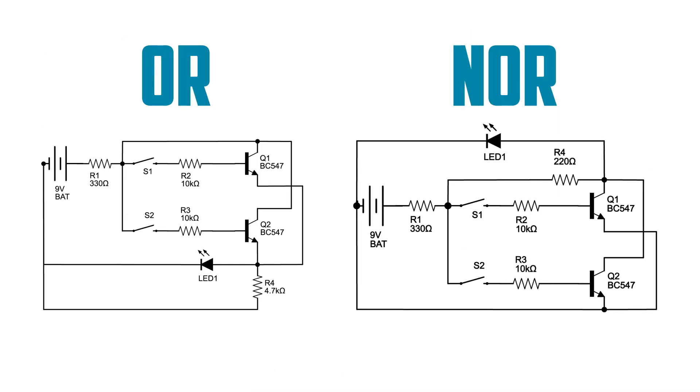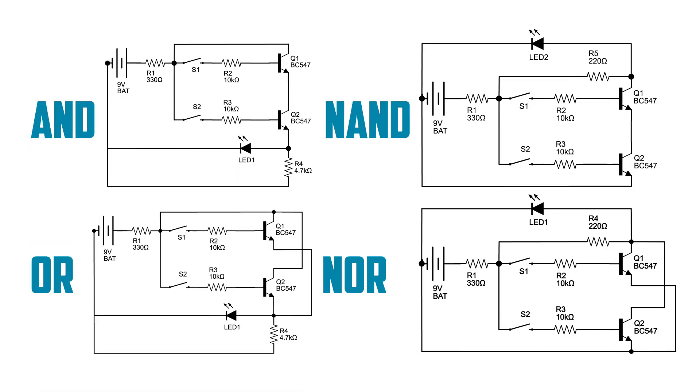You can see that the NOR gate, once again, is like the OR gate, but with the LED and spare resistor moved from Q2's emitter to Q1's collector. Compared side by side, you can see the similarities between the AND and OR gates, as well as the NAND and NOR gates.